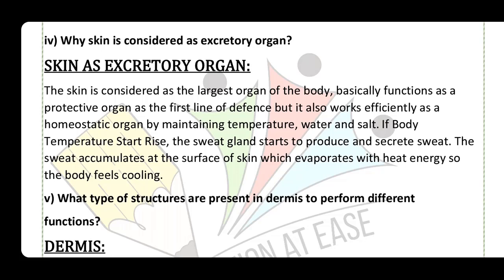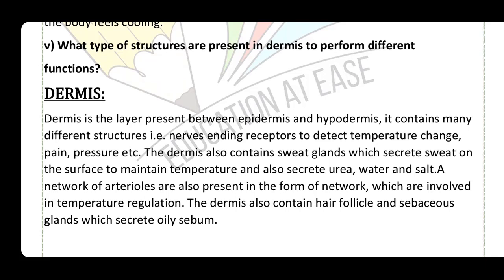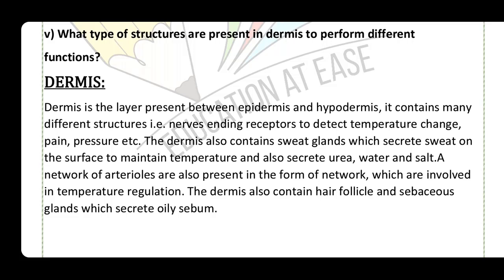What types of structures are present in the dermis to perform different functions? Dermis is the layer present between the epidermis and hypodermis. It contains nerve ending receptors to detect temperature changes, pain, and pressure. The dermis also contains sweat glands which secrete sweat on the surface to maintain temperature and also secrete urea, water, and salt. A network of arterioles is present for temperature regulation. The dermis also contains hair follicles with sebaceous glands that produce oily sebum.